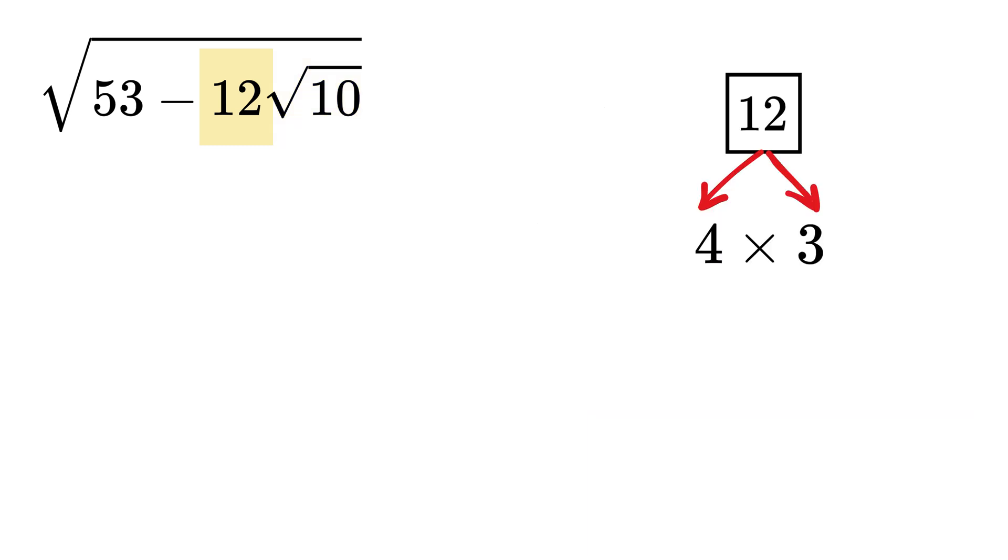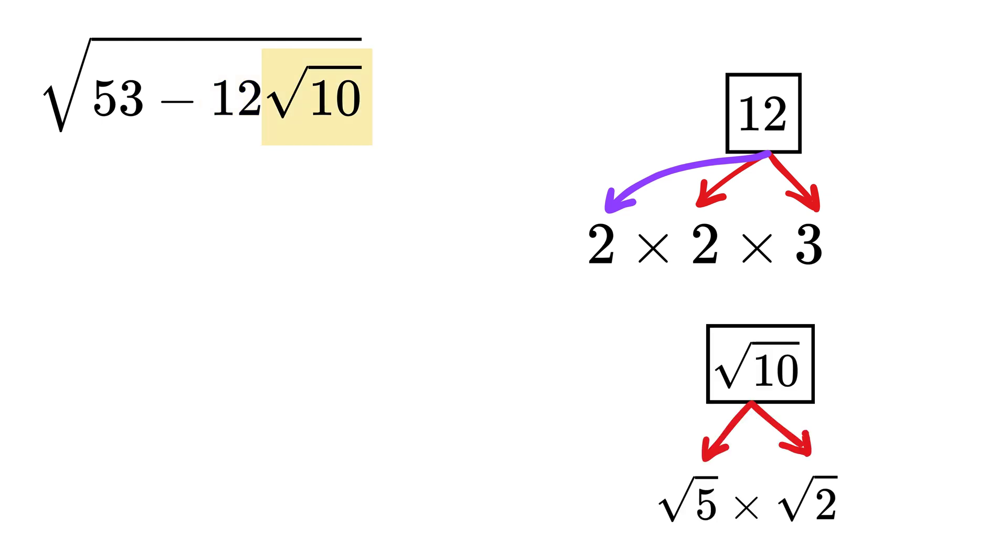12 can be written as 4 times 3, and this 4 can again be written as 2 times 2 times 3. And this choice is intentional, because later you will see that it will help us form a well-known mathematical identity. Then the square root of 10 can be rewritten as the square root of 5 times the square root of 2.